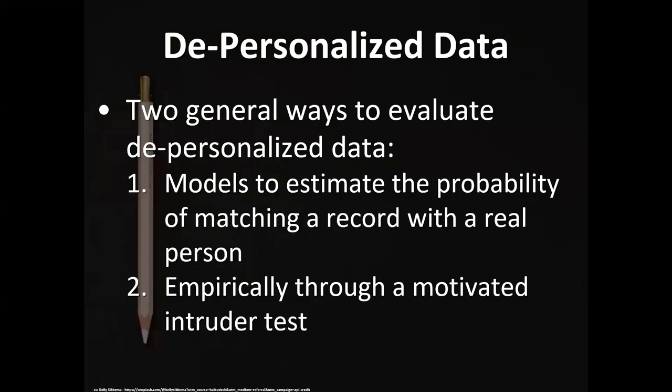Let me start by talking about depersonalized data. Depersonalized data can be used for secondary purposes such as analytics and machine learning. There are different techniques for depersonalization, including de-identification and data synthesis, each achieving different degrees of protection. Once data is depersonalized, you need to evaluate how effective that process has been. This is done by matching records in the depersonalized data with real people in the population — and you'd want very few correct matches.